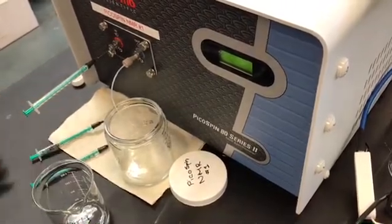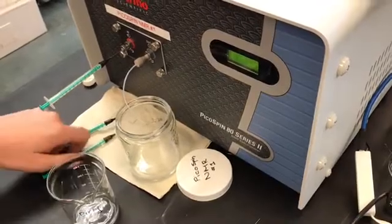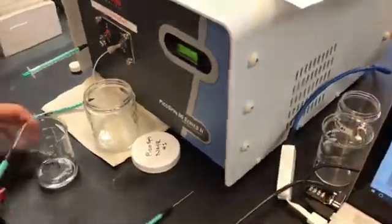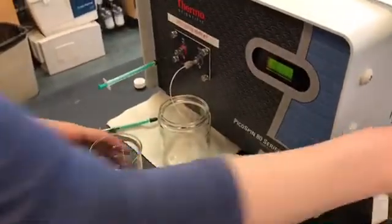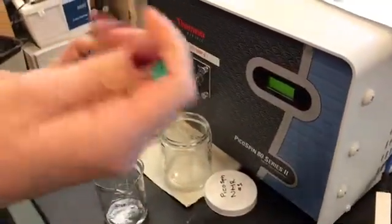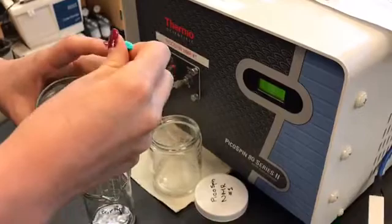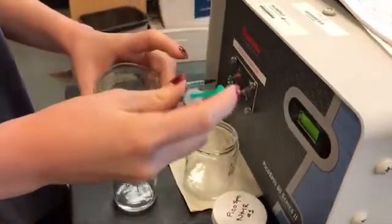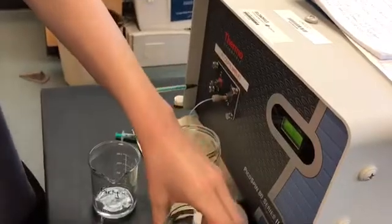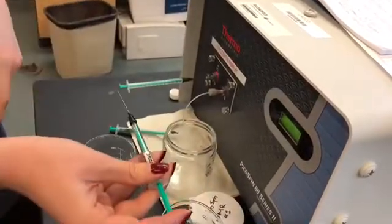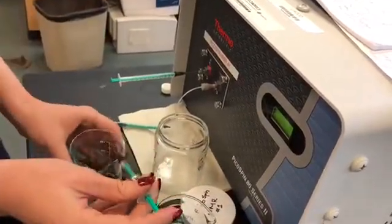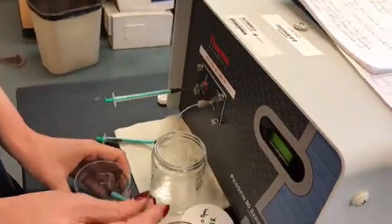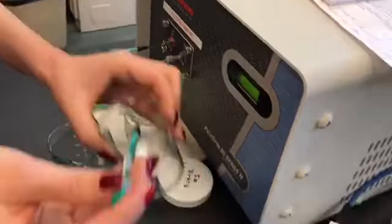So to clean out your sample syringe, we're going to flush it two times with acetone. So I got some acetone into my syringe. I'm going to put that in the waste, and I'll do that one more time.